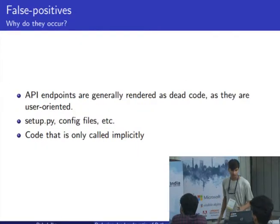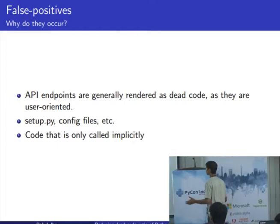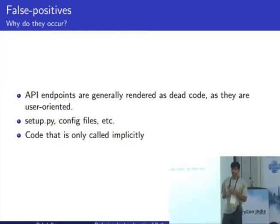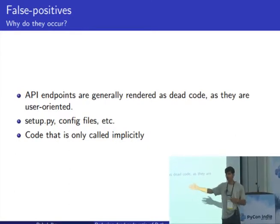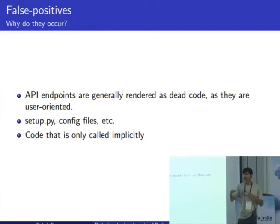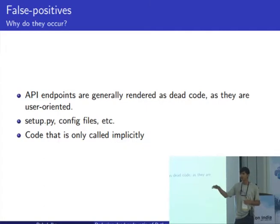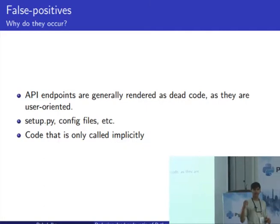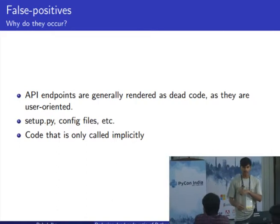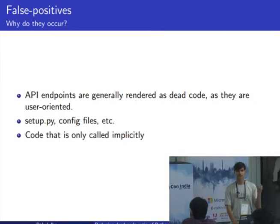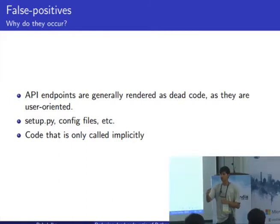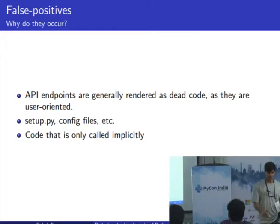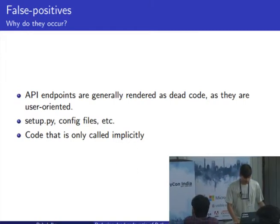Let me briefly talk about false positives — why do they occur? False positives generally occur because your program provides an API for a user class to handle. Those functions would technically be called by your user and not by the program itself, so they would be technically dead but you need them to be there. They would be rendered as false positives by Vulture, but you can just whitelist them. Whitelisting is a neat way of neglecting those cases of dead code — Vulture won't report them.